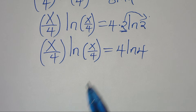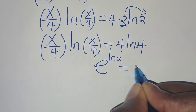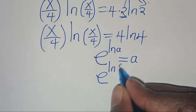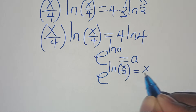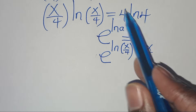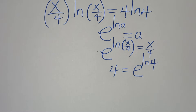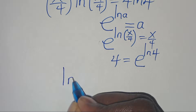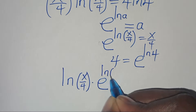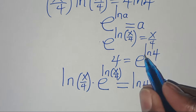The next step is to introduce the exponent property where e to the power of ln of a equals a. This means exponent e to the power of ln of x over 4 equals x over 4, and we can also express 4 as exponent e to the power of ln of 4. Substituting this, we have ln of x over 4 multiplied by e to the power of ln of x over 4, this is equal to ln of 4 multiplied by e to the power of ln of 4.